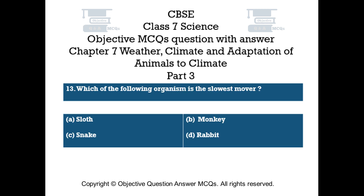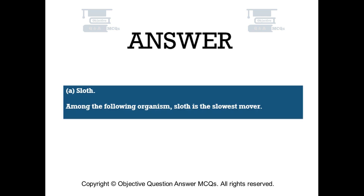Question number 13. Which of the following organisms is the slowest mover? Option A: Sloth. Option B: Monkey. Option C: Snake. Option D: Rabbit. The right answer is Option A — Sloth. Among the following organisms, Sloth is the slowest mover.